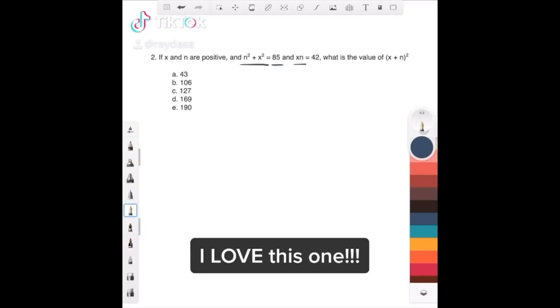n squared plus x squared is 85, xn is 42, and we're looking for x plus n squared. And people look at this and say, okay, well, I gotta solve for n, I gotta solve for x, what do I do with these two equations?